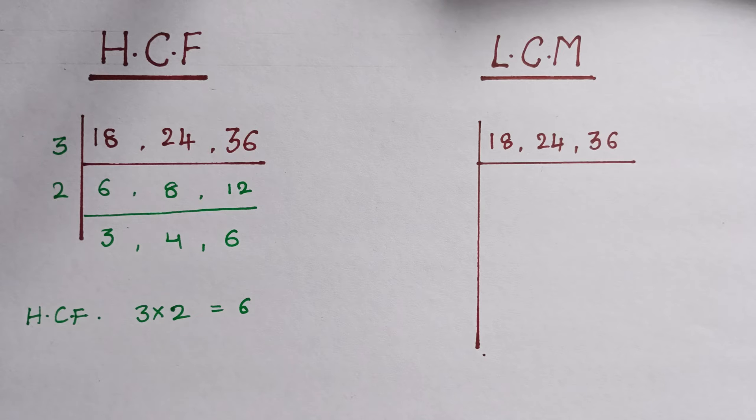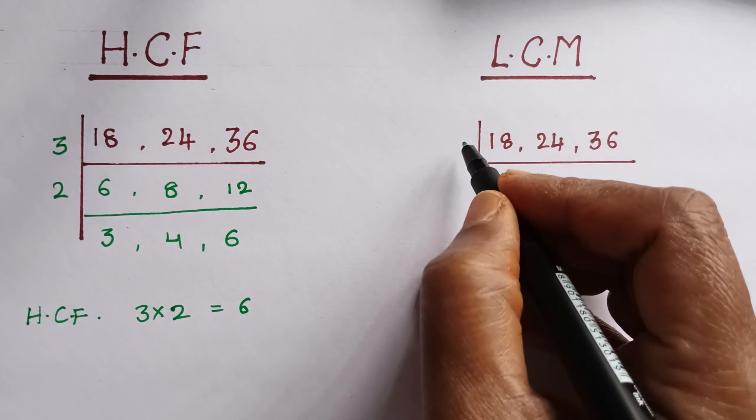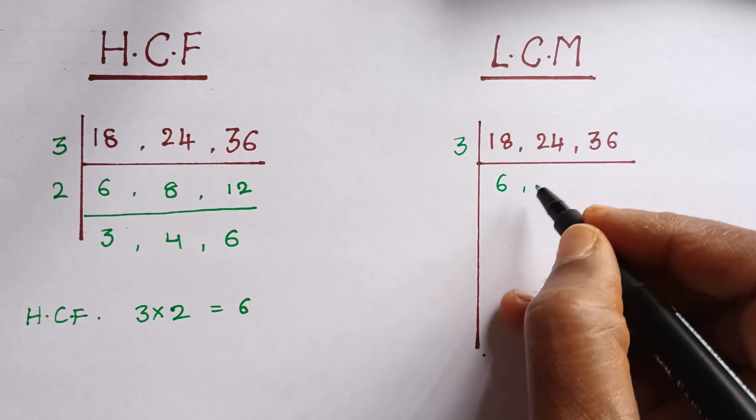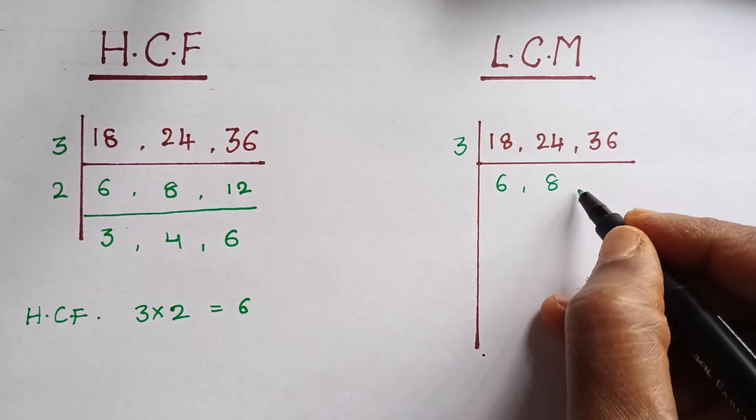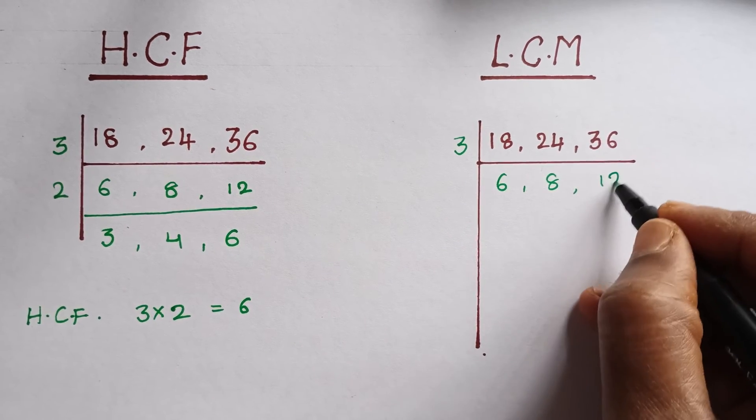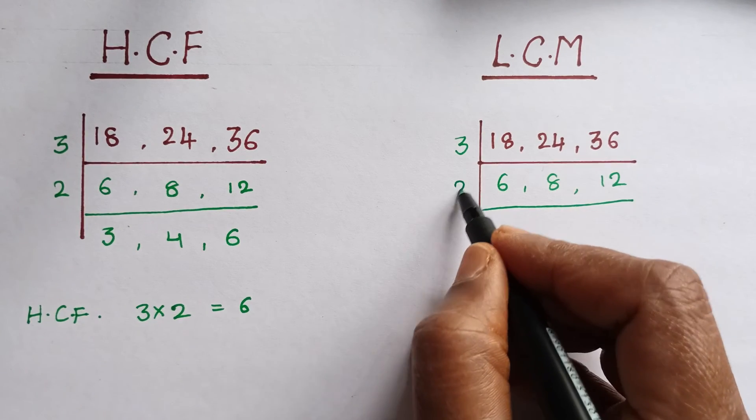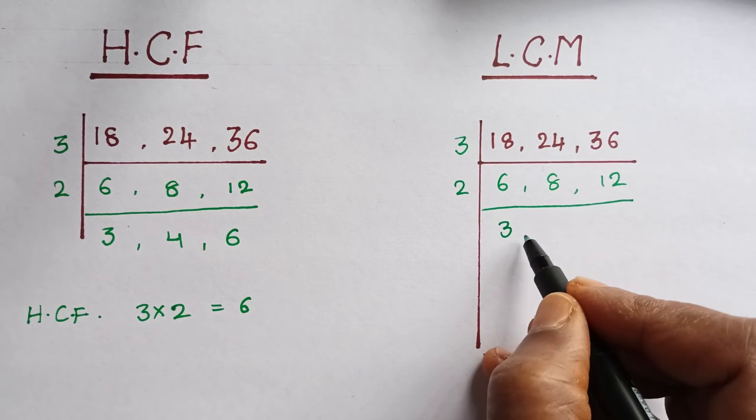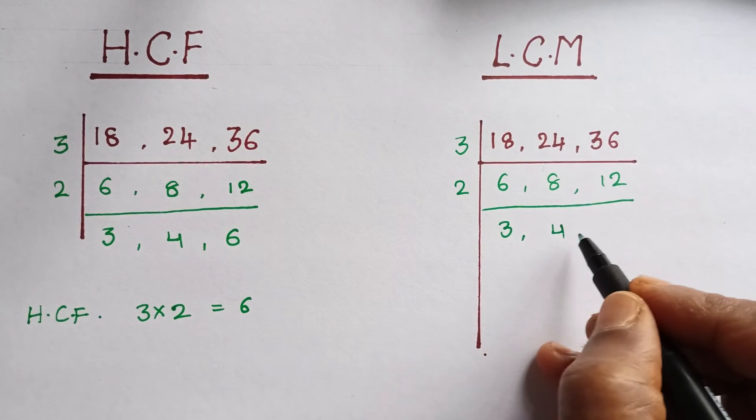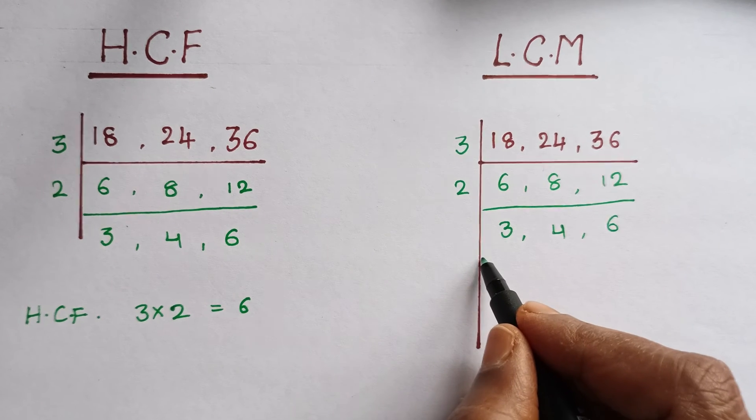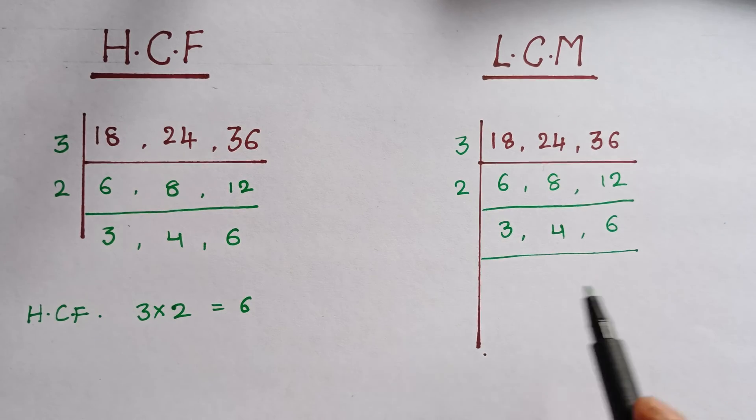Now the LCM. In LCM, for single digit we should have the factors. So now we can start with the same 3 table: 3 times 6 is 18, 3 times 8 is 24, and 3 times 12 is 36.